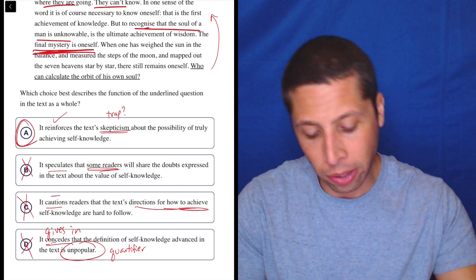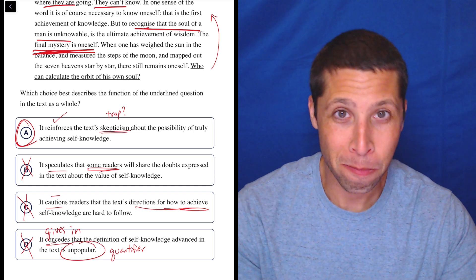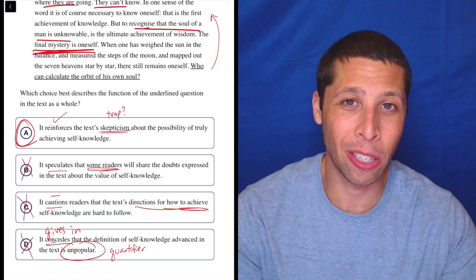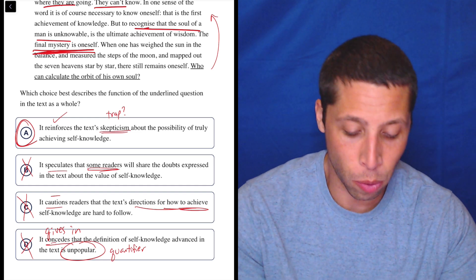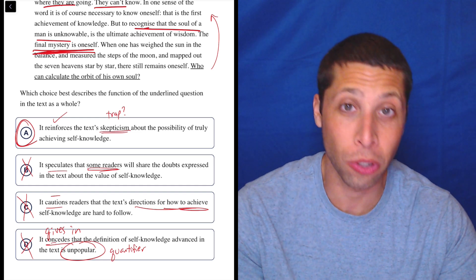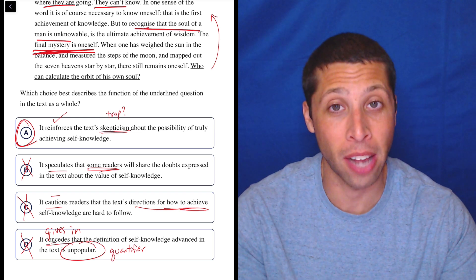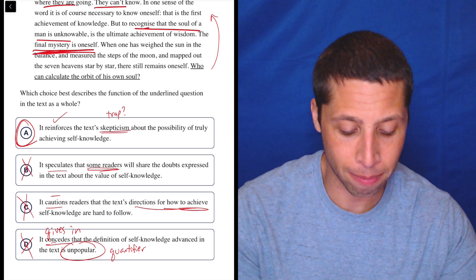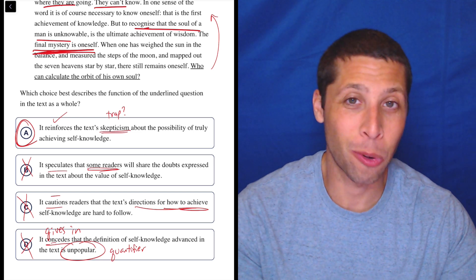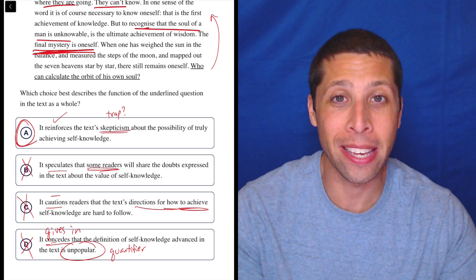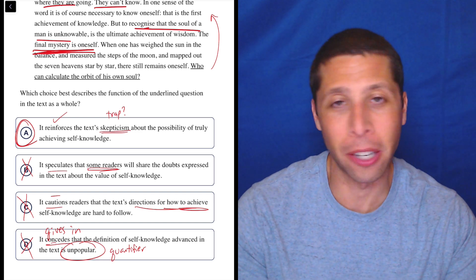So I think I was a little nervous about choice A because I have seen traps like that before, but there wasn't really anything else that it could be. And so, mission accomplished. And it does seem skepticism, right? It's asking a question, who can calculate the orbit of his own soul? I guess it's a rhetorical question and maybe the idea is that no one can based on everything else Oscar Wilde says. But yeah, something to just think about is be careful when they ask questions and then they ask you what the purpose is. It might not be actually to be skeptical or question something. It might have a deeper purpose, but here it's pretty face value.